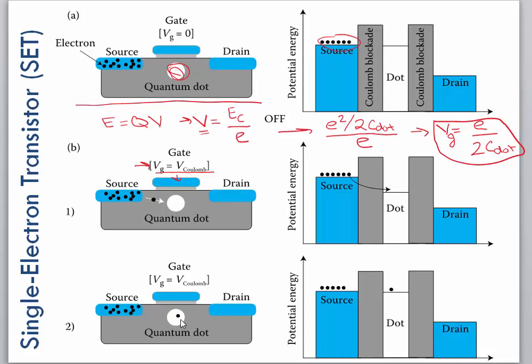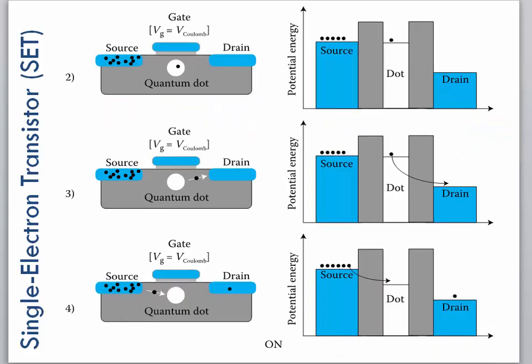So once the electron tunnels into the quantum dot, then the potential energy of that dot is raised again, and what happens next is, let's go to the next page.